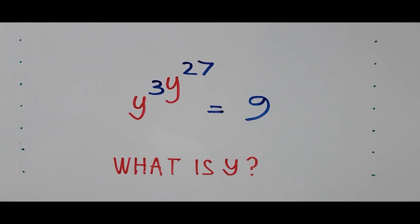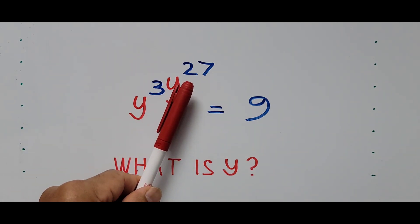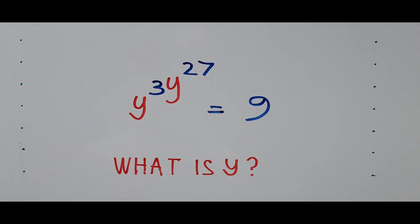Good morning or good evening everybody. Magandang umaga po or magandang gabi sa ating mga kababayan. Welcome to Casiano Easy Math. Today's video is an exponential equation: y raised to 3y raised to 27 power equals 9. Today's video instructions are in Taglish — Tagalog-English — to reach out to everybody, including all the Filipinos around the world subscribing to this YouTube channel.